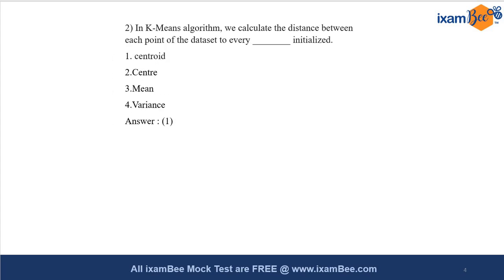The second question is related to the K-means algorithm. The question asks: in the K-means algorithm we calculate the distance between each point of the dataset to the dash initialized. The correct answer is centroid. The topic can vary across many areas — this particular question is from machine learning, supervised and unsupervised learning, covering regression, classification, and similar algorithms. The K-means algorithm identifies the distance between each data point and every initialized centroid.